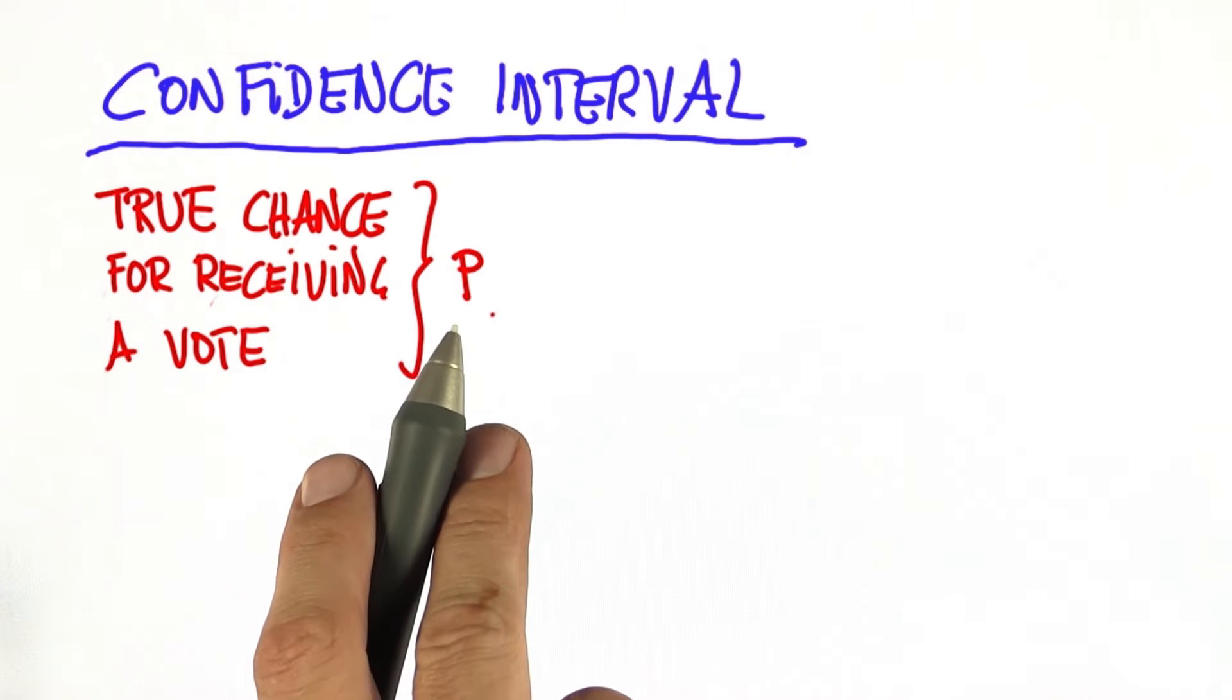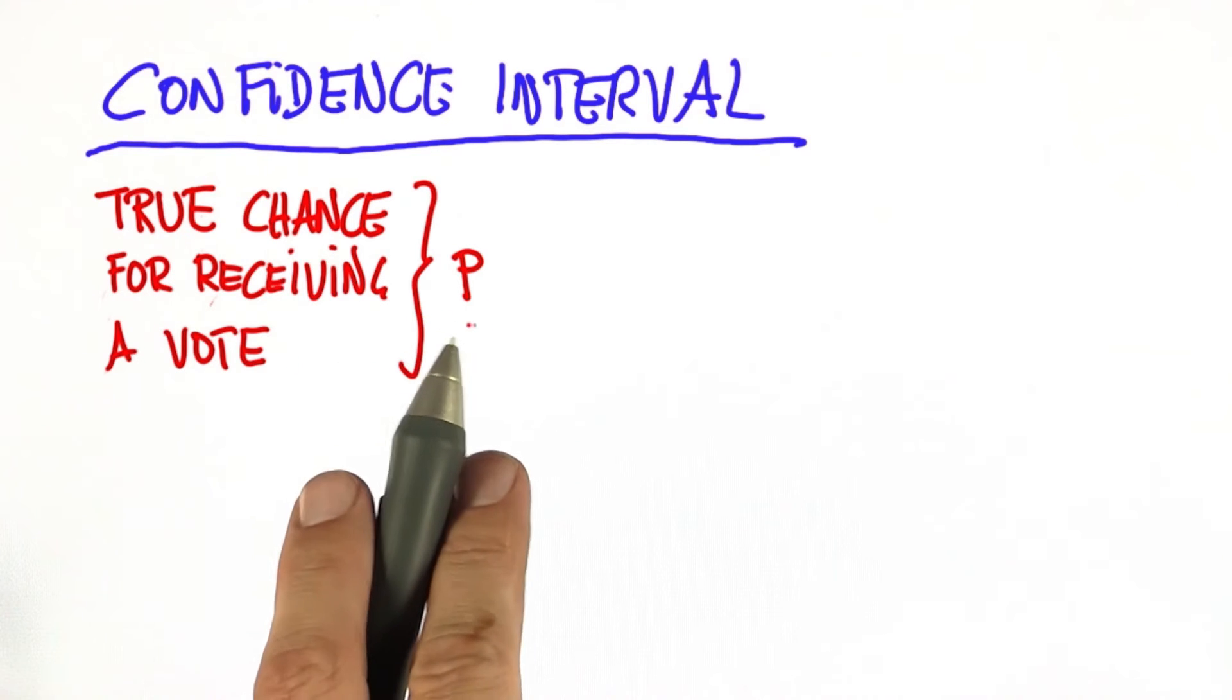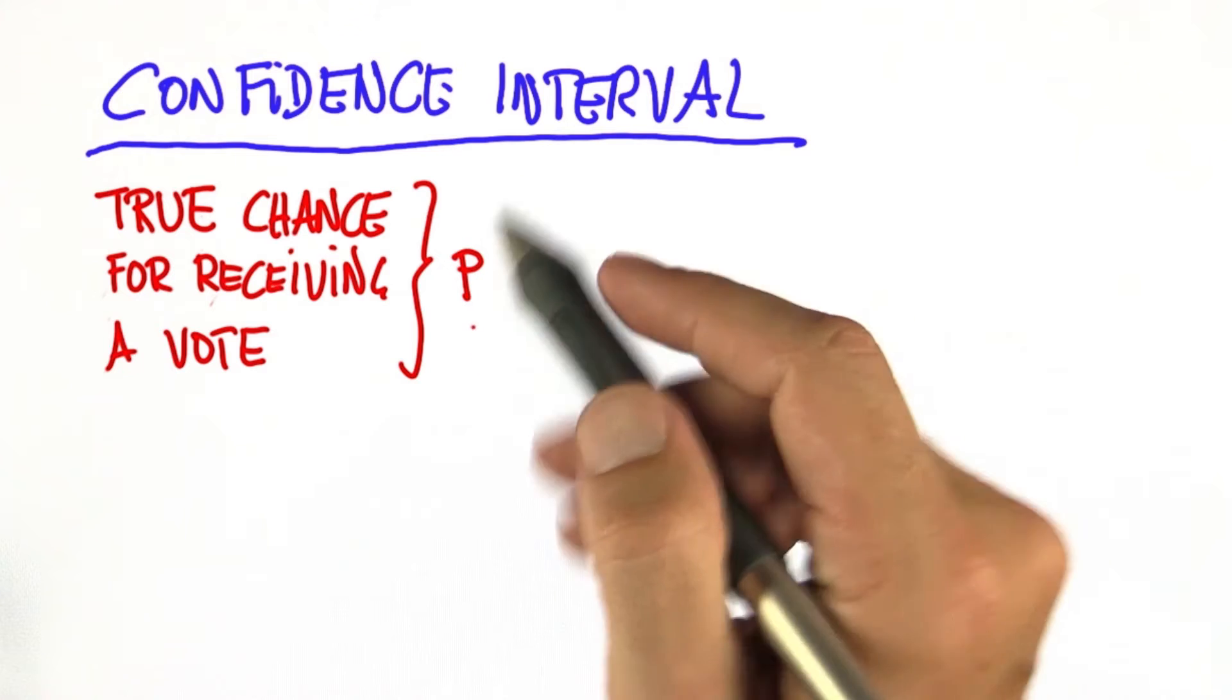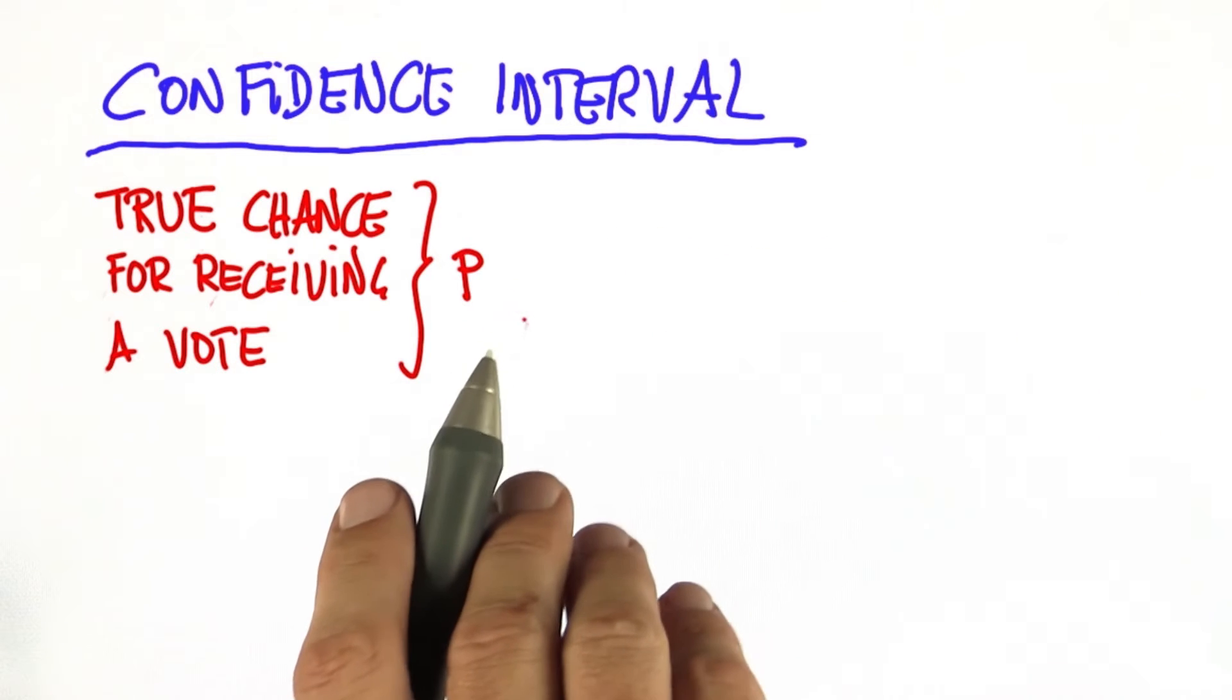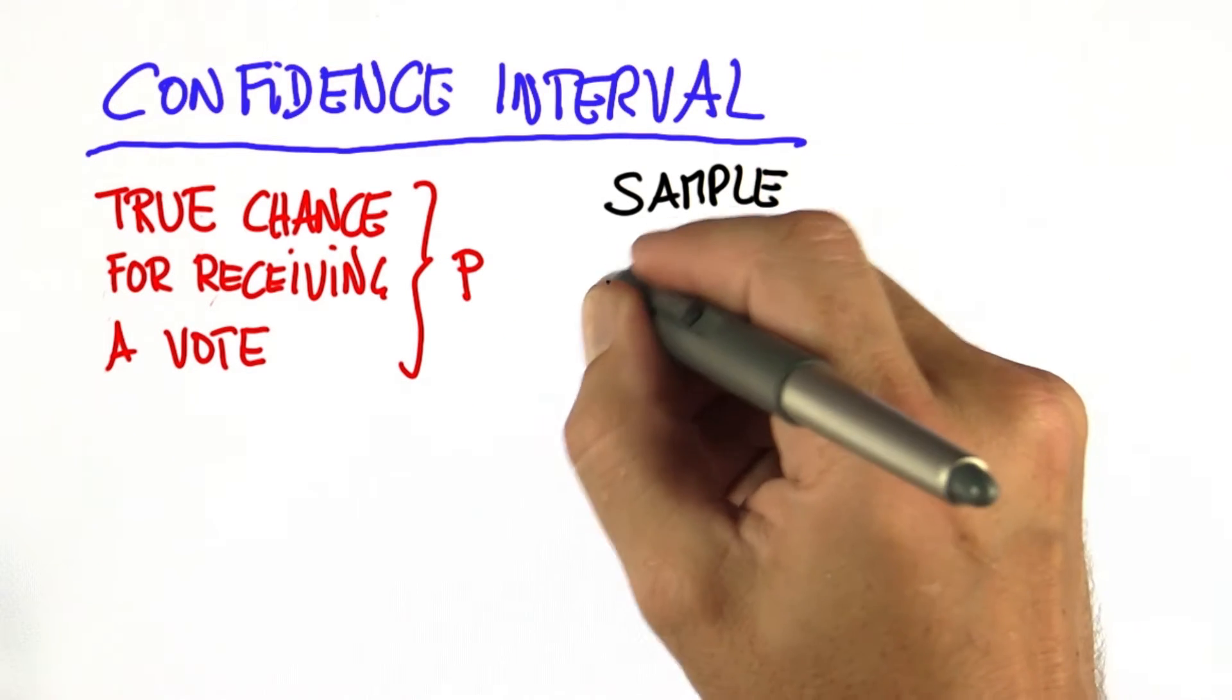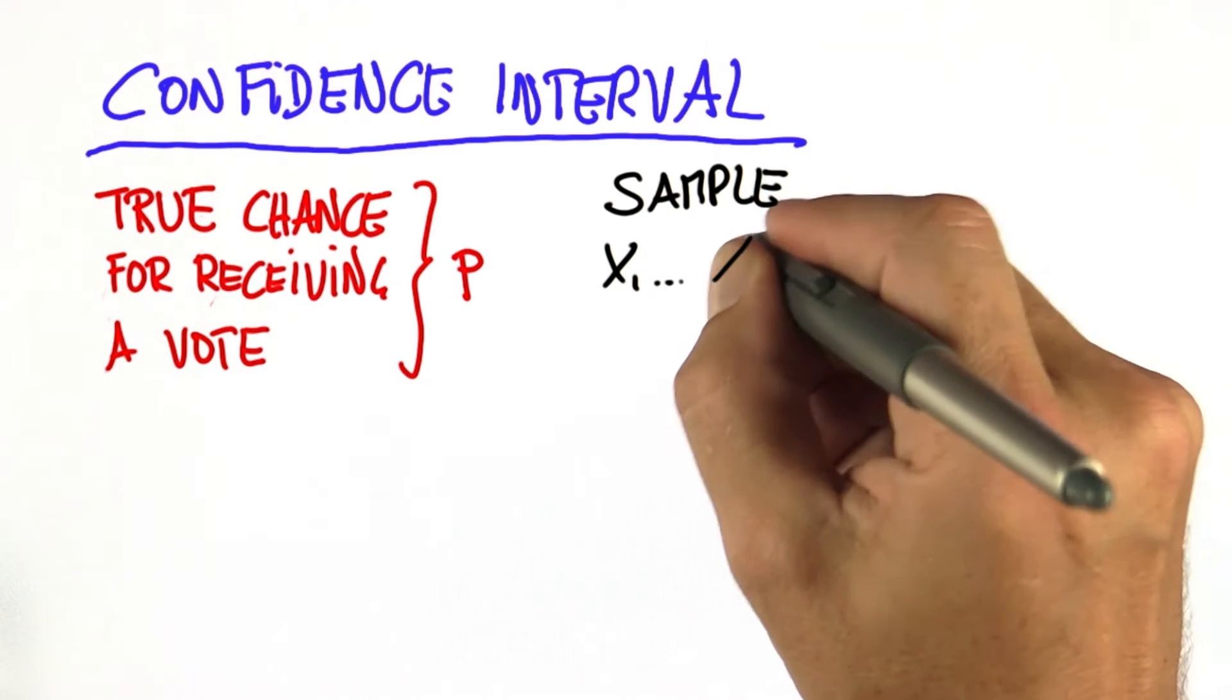Of course, if P is larger than 0.5 in a two-person runoff, that person will naturally win in most cases, not always. But as a statistician, we can't assess the true chance. So what we do is we form a sample.